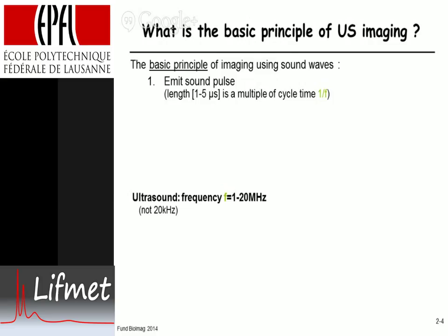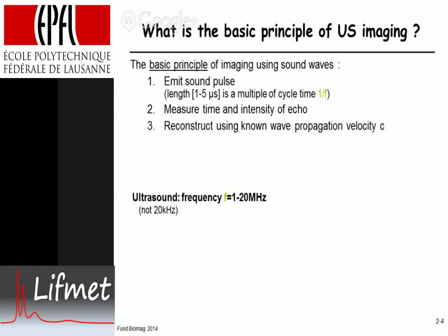Typically not 20 kilohertz or 30 kilohertz — we're talking megahertz here, which is still ultrasound. After emitting the sound pulse, one measures the time and intensity of the echo. Many of you have experienced this when hiking in the mountains. When you see a lightning pulse and count seconds afterward, you're using the same principle to calculate the distance to the lightning — using a known sound propagation velocity C to reconstruct the location where the echo was produced.